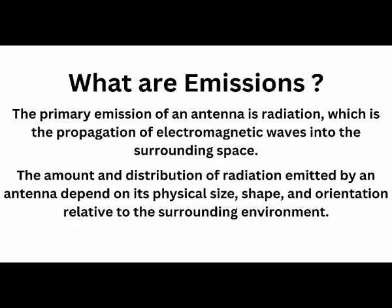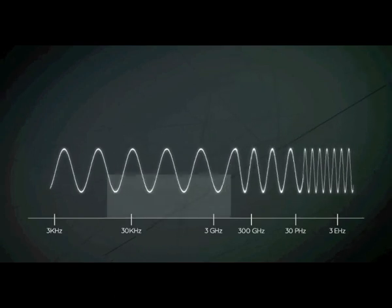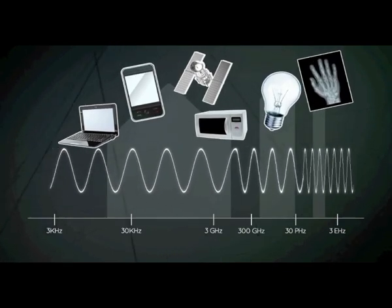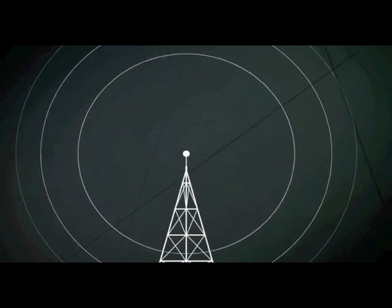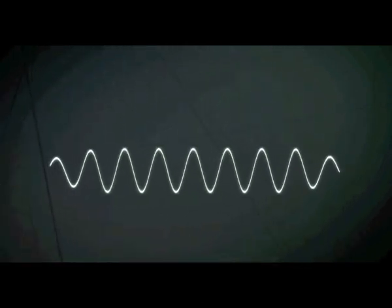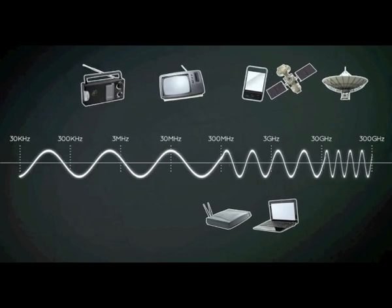Now we come to the final topic of this video — emissions. Emissions are nothing but electromagnetic waves. As you know, radio waves are a form of electromagnetic waves — a combination of electric waves and magnetic waves induced together. They are transmitted depending on the type of frequency and the energy the waves carry. Some radio waves are harmful to your body, like X-ray waves, which are also a type of electromagnetic wave — prolonged exposure to X-rays is harmful.